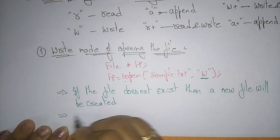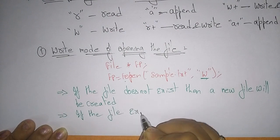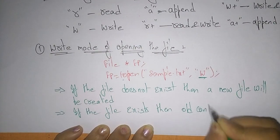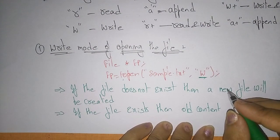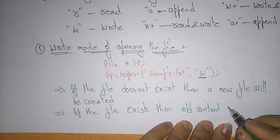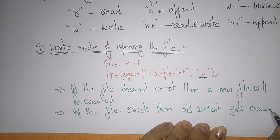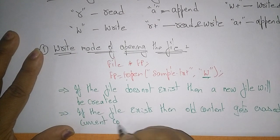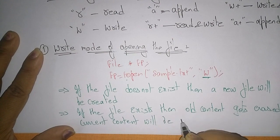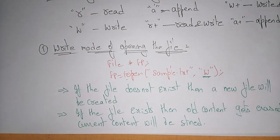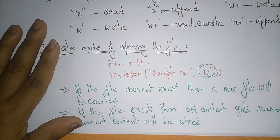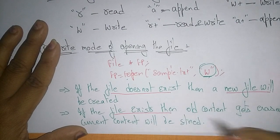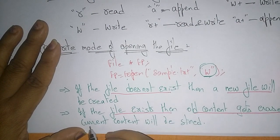Suppose the file already exists — if the file is already there and you want to write some data, then the old content, whatever text is present in sample.txt, gets erased. Whenever you are doing the write operation, the old data gets erased and the current content will be stored. So this is the write mode: if the file does not exist it creates a new file; if the file exists, the old content gets erased and the current one is stored.